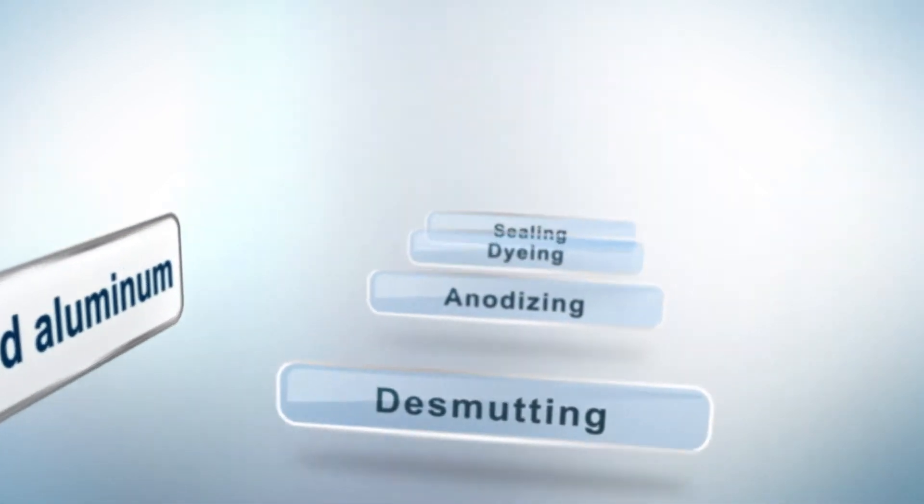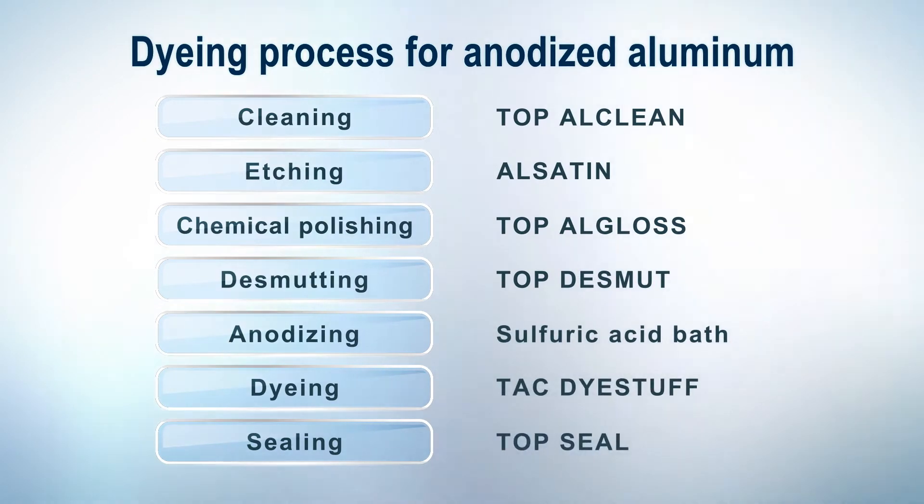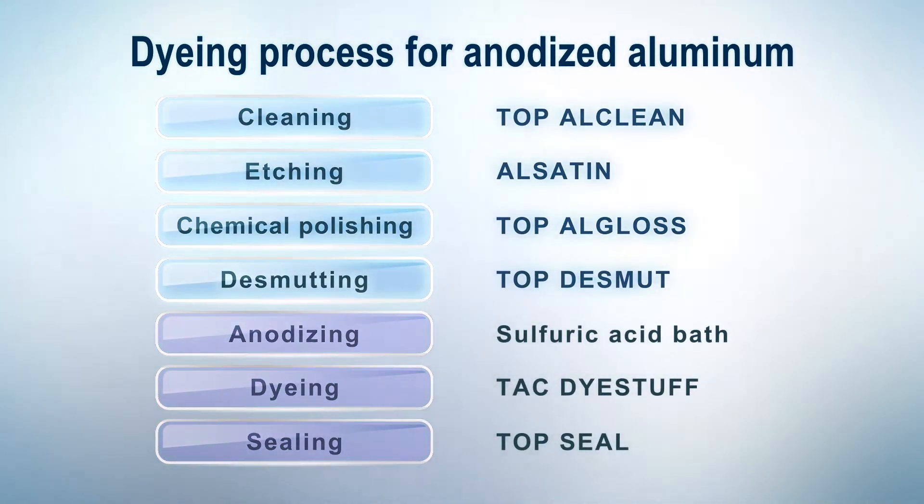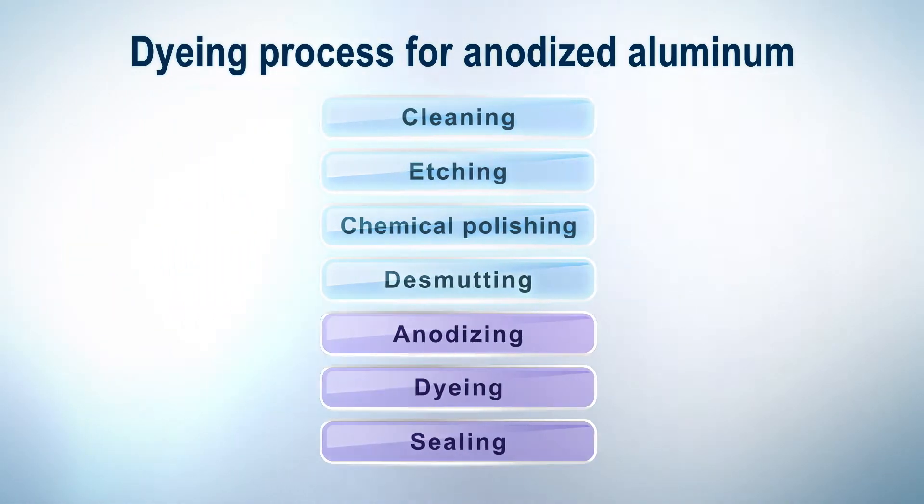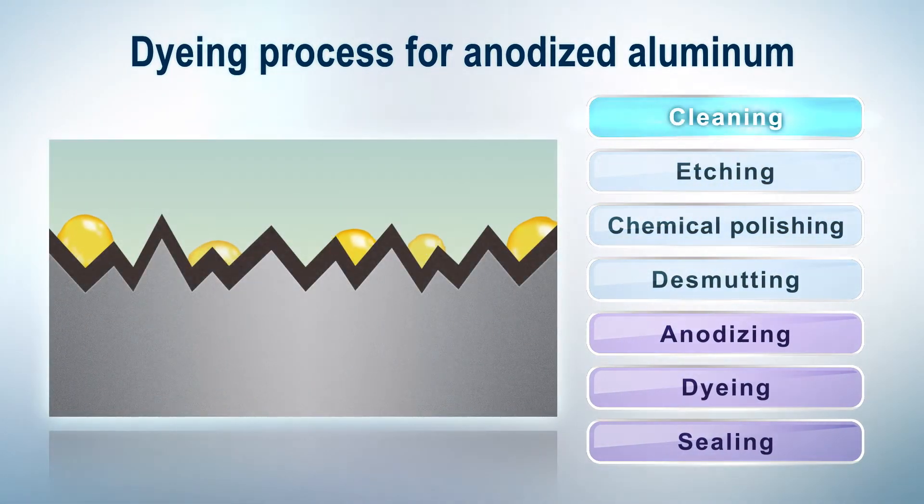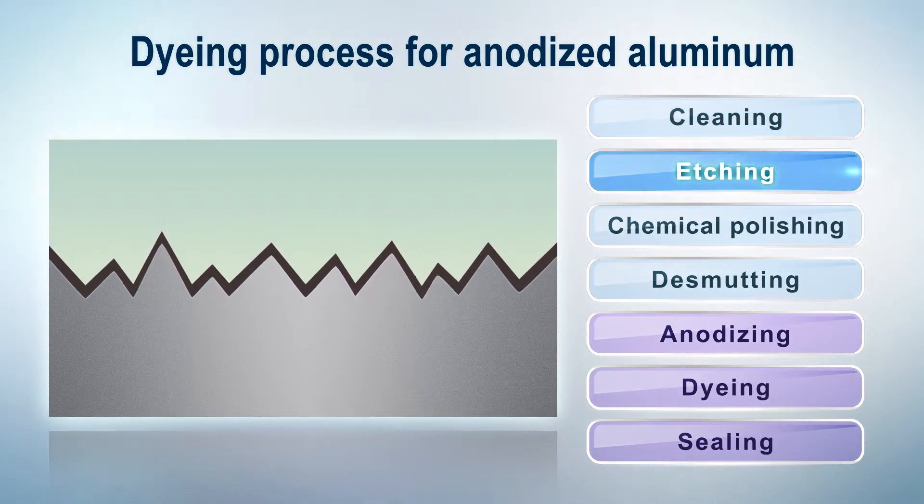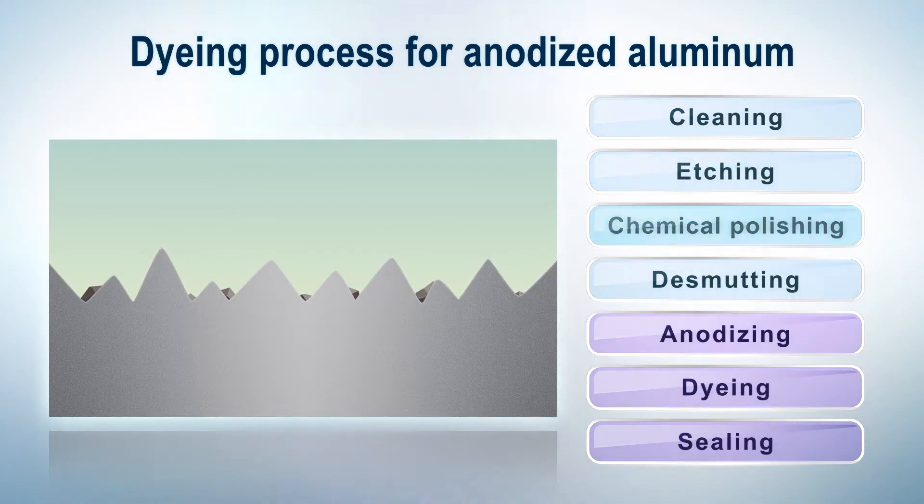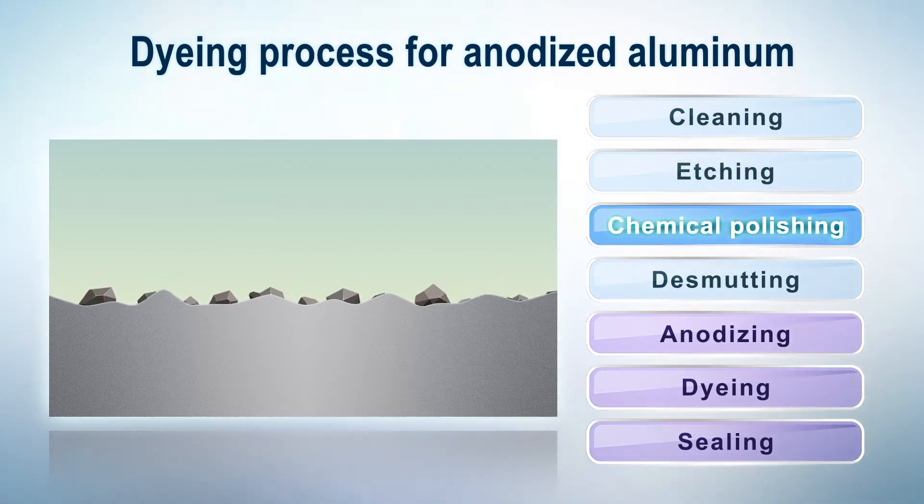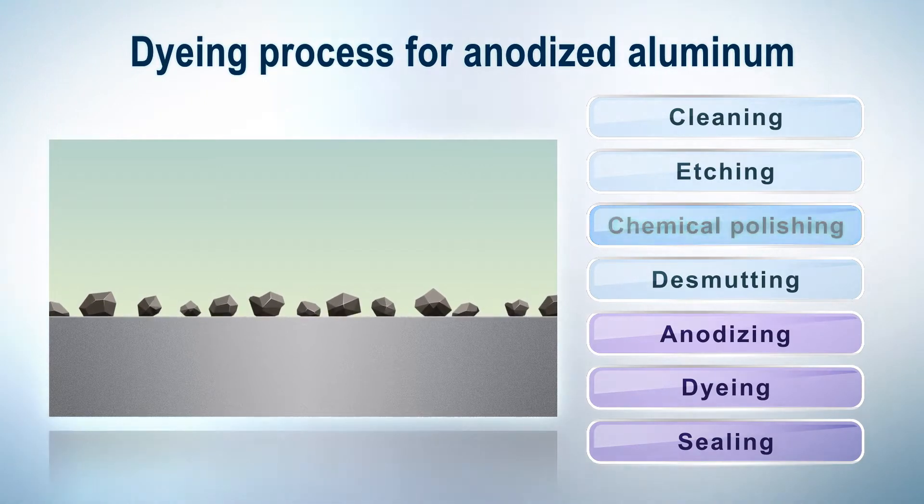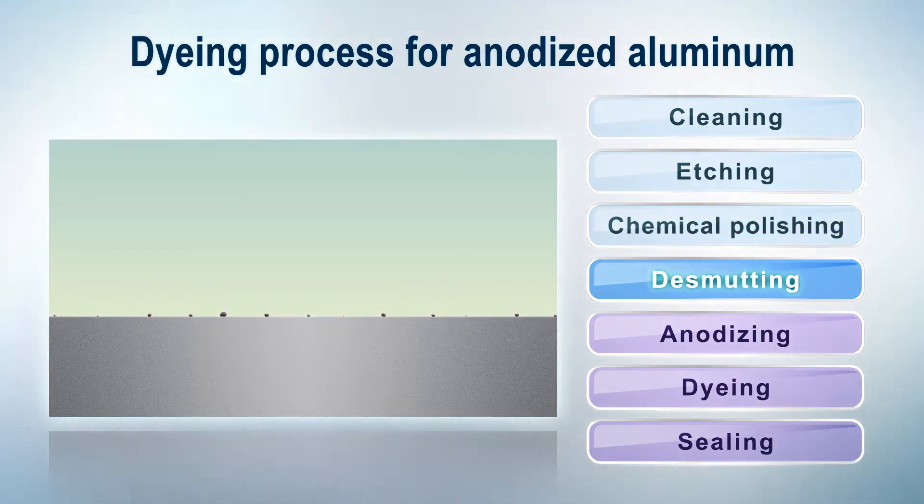Let's take a look at the dyeing method for anodized aluminum. The process begins with pre-treatment, a procedure that has a great impact on the finished appearance. To start with, dirt is cleared from the surface of the aluminum. After which the naturally oxidized films are removed. The surface is then chemically polished to achieve a glossy appearance. And finally, any remaining materials are removed from the surface of the aluminum.